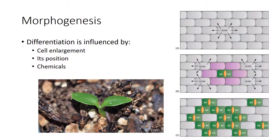From a single cell, the zygote must undergo morphogenesis and differentiation. Differentiation begins with the first cell division. To differentiate into the correct type of mature plant cell, an unspecialized cell in a meristem might be influenced by cell enlargement, its position, or chemicals from other cells. Consider the differentiation of guard cells that must occur in pairs. A pattern establishment mechanism in some cells informs each cell of its location or position relative to other cells. This way, one guard cell won't develop to form a pore facing the wrong direction.